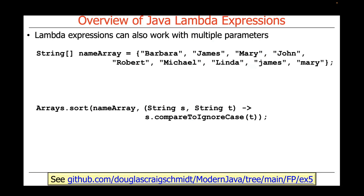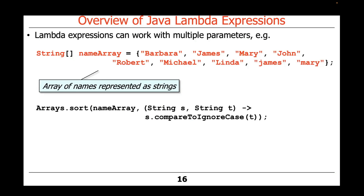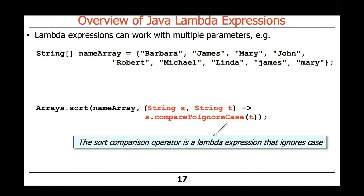Lambda Expressions can also work with multiple parameters. This example is in my GitHub repository. We have a string array called name array with the names of some people — Barbara, James, Mary, and so on — and we're going to sort those names. We use a simple lambda expression that takes a string s and a string t, because that's what sort expects. It expects comparisons that know how to compare two elements in the array, and it'll compare s with t as strings, ignoring case — a case-insensitive comparison.